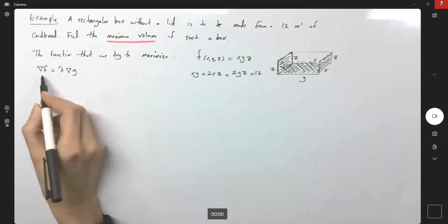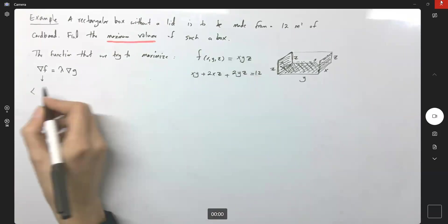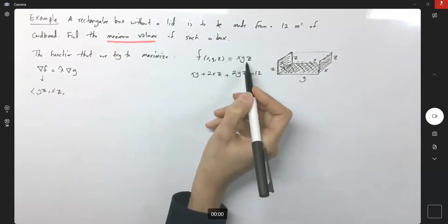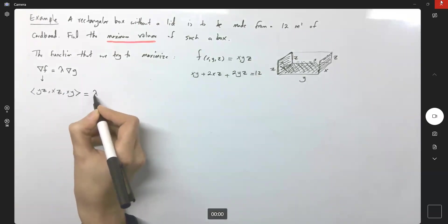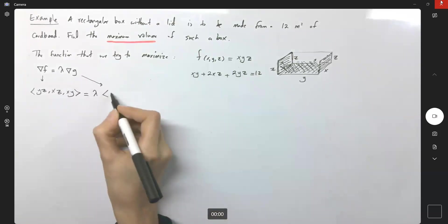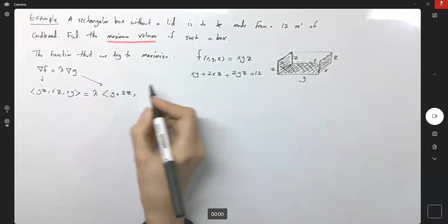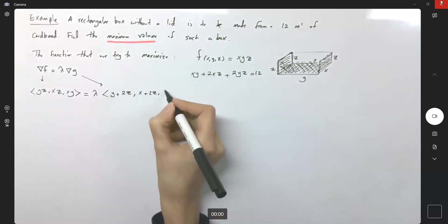So for the calculus part, the gradient of f is equal to the vector: with respect to x is y, z; with respect to y, it is x, z; and with respect to z, it is x, y. Equals to lambda and the gradient of g, the vector: with respect to x, I have y plus two z; with respect to y, I have x plus two z; and finally with respect to z, I have two x plus two y. Very good.